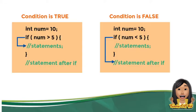Now for the condition being true or false: for example, int num is equal to 10. If num is greater than 5, it will display the statement or execute the block of code inside the body. This is the body of the if — the block of code. For example, int num is equal to 10, if num is lesser than 5 — 10 is not lesser than 5 — so it becomes false. It will just exit the block of code and instead execute whatever is below the if block.